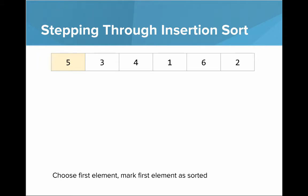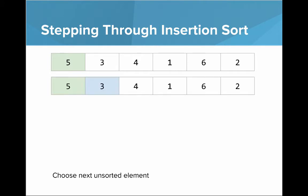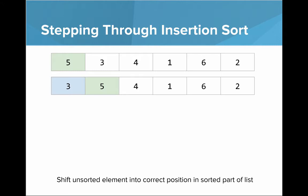Let's step through insertion sort to really understand it. We're going to choose the first element and mark that first element as sorted — it's now green. Choose the next unsorted element, which is a three. We want to shift that unsorted element into its correct position in the sorted part of the list. Now those first two elements, three and five, are sorted — the left part of the list is sorted.